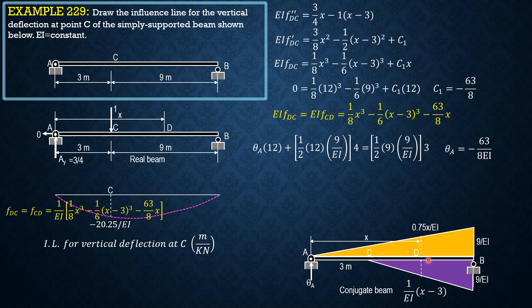Then considering section D, from A to D, we have F DC. Summation moment at D equals 0. So F DC plus 1 half of X minus 3 times 1 over EI X minus 3 times X minus 3 over 3 EI moment arm.